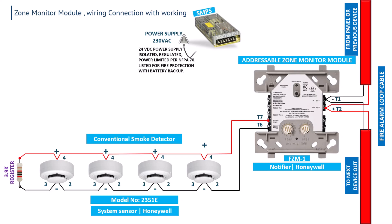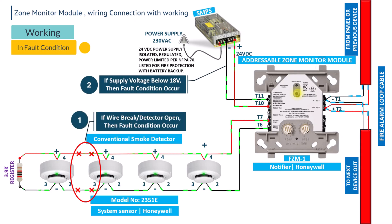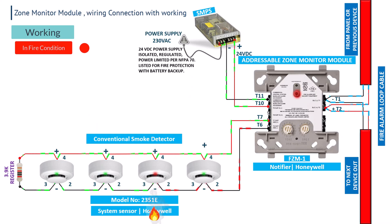In the zone monitor module's T11 and T10 terminals, a battery backup 24V DC power supply is connected. In normal condition, there is a green indication on the zone monitor module. If the zone cable is open or short, the zone monitor module gives an orange indication, meaning there is a fault. If a fire event occurs, the detector goes into fire condition, the zone monitor module receives the fire signal and a red indication lights up. The zone monitor module immediately sends the fire signal to the fire alarm panel, which alerts the system and displays the address of the zone.